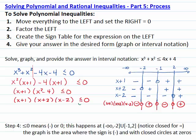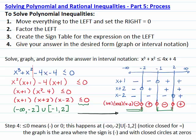Our solution — less than or equal to zero means negative or zero. In interval notation: negative infinity to negative 2, closed, union, closed negative 1 to 2, closed. As a graph on the number line, there is a closed circle at negative 2 shading to the left, a closed circle at negative 1 shading to the right up to a closed circle at 2.